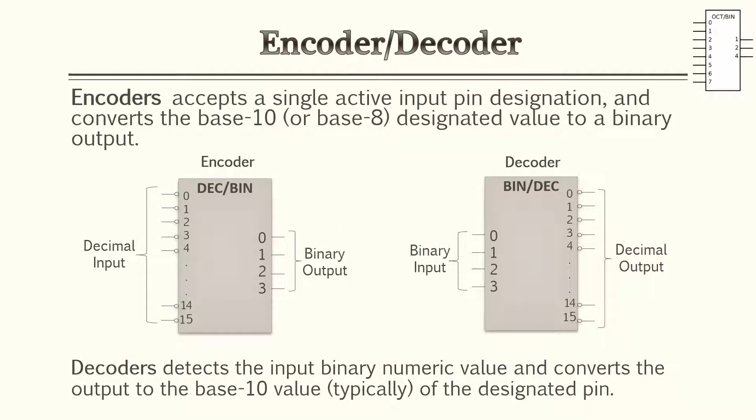Now we can jump into more complex devices. We have encoders and decoders. Encoders accepts an active input pin designation and converts that pin to a binary output. And a decoder would take a binary input and convert it to a single pin output.